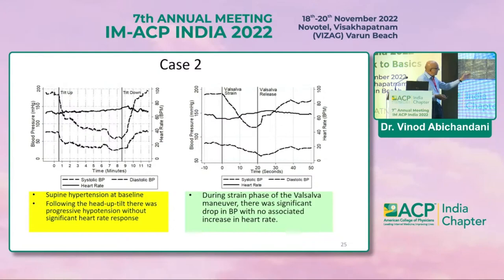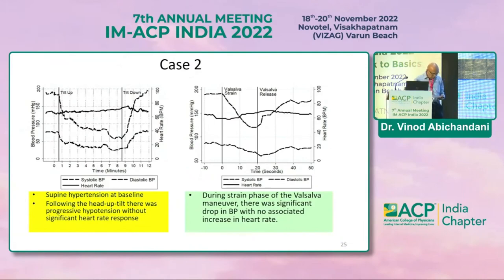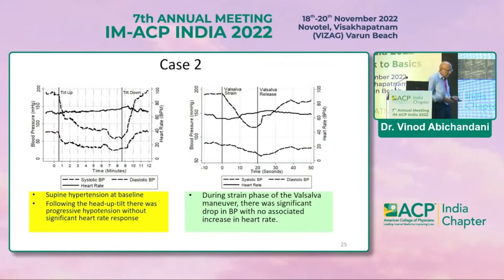A schematic presentation showed supine hypertension at baseline. Following head-up tilt there was progressive hypotension without significant heart rate change. The systolic and diastolic blood pressure lines dropped progressively while the heart rate line remained flat. During the strain phase of the Valsalva maneuver there was a significant drop in blood pressure with no associated increase in heart rate — heart rate remained unchanged.